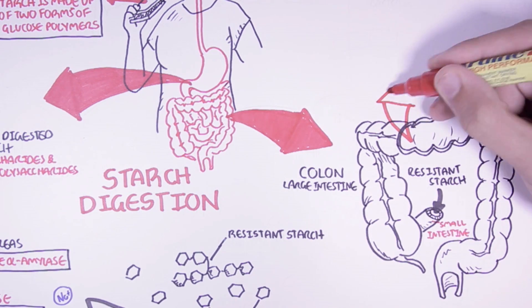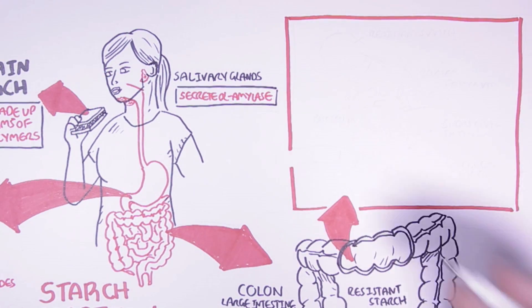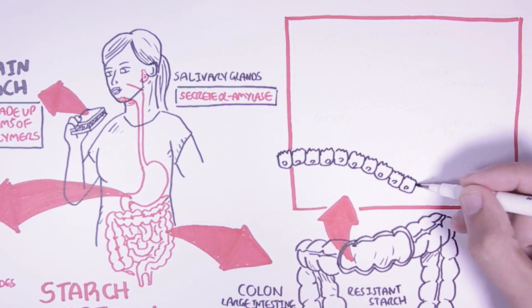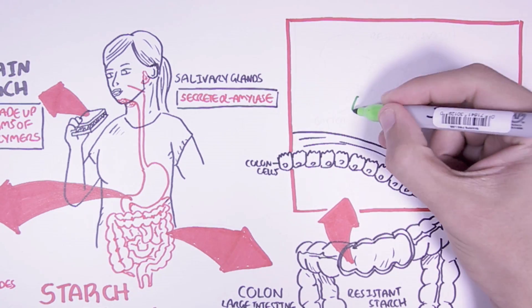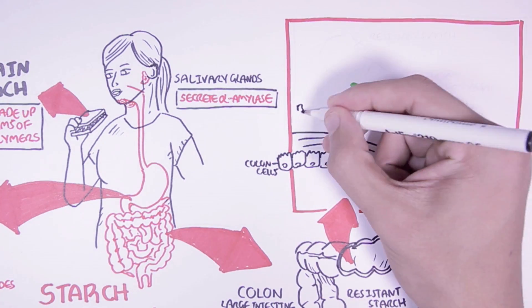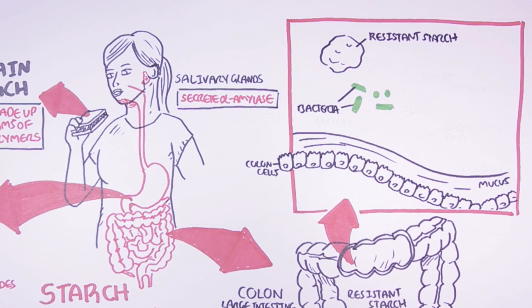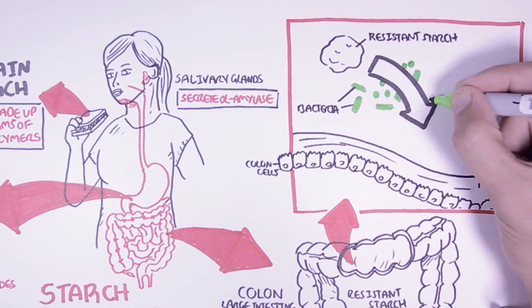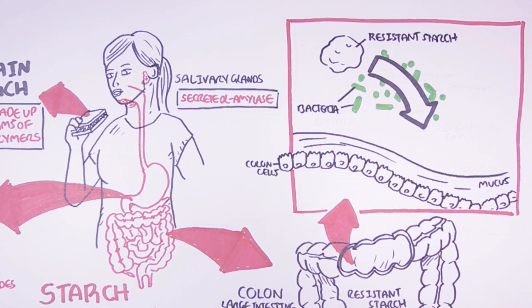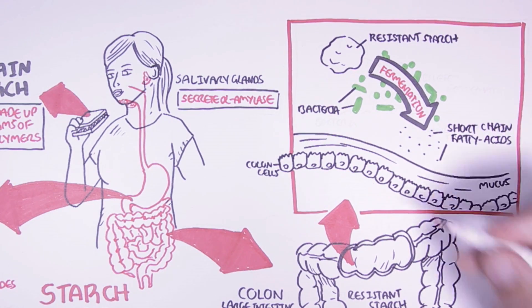So zooming into the colon, here we have the colon cells and the mucus. The resistant starch here will encounter all these bacteria within the colon. And through bacterial fermentation, the bacteria will produce a by-product such as short chain fatty acids, which will be subsequently used by the human body.